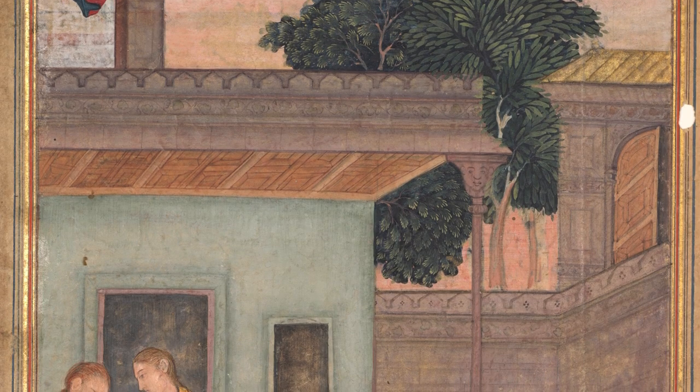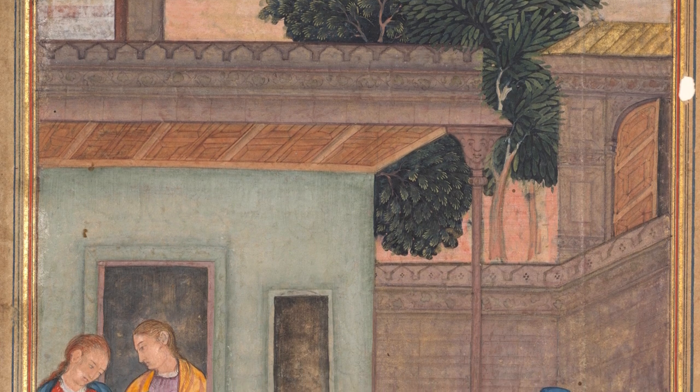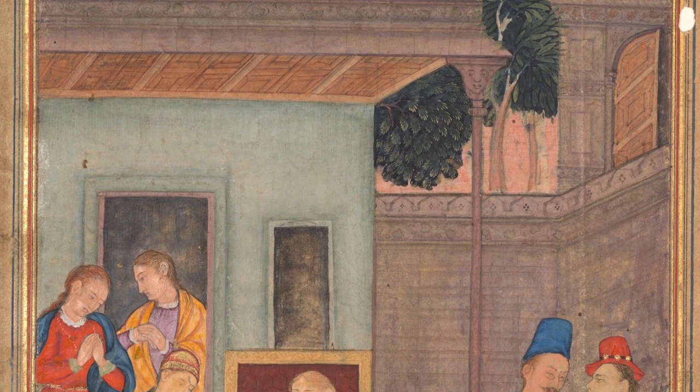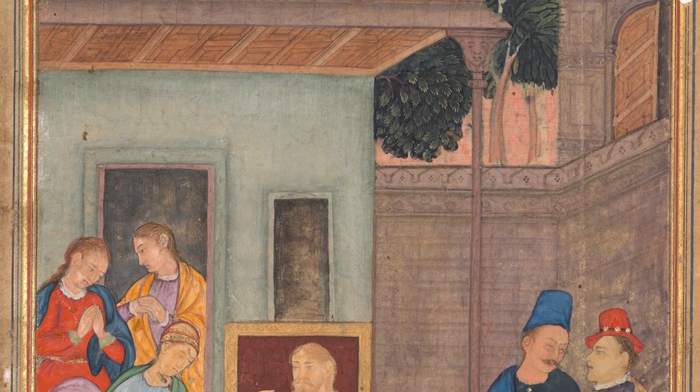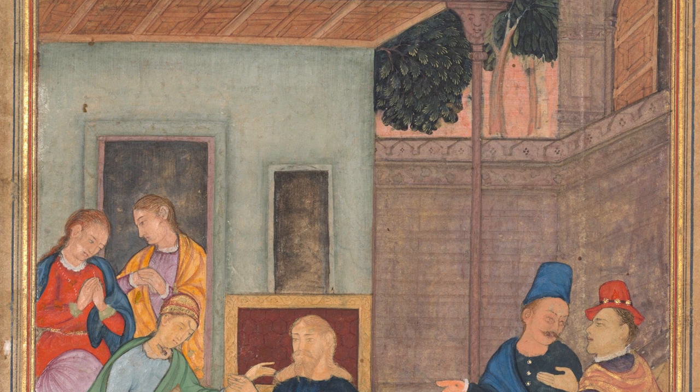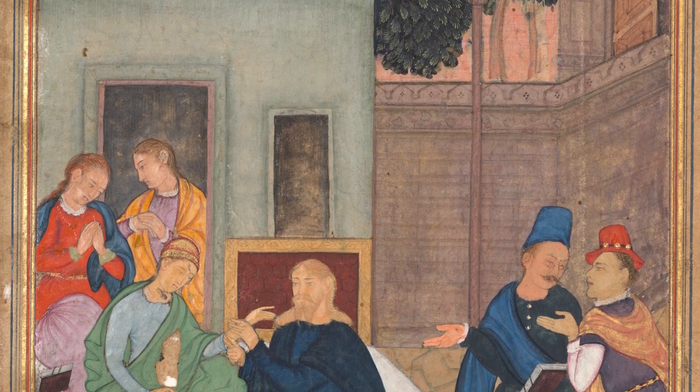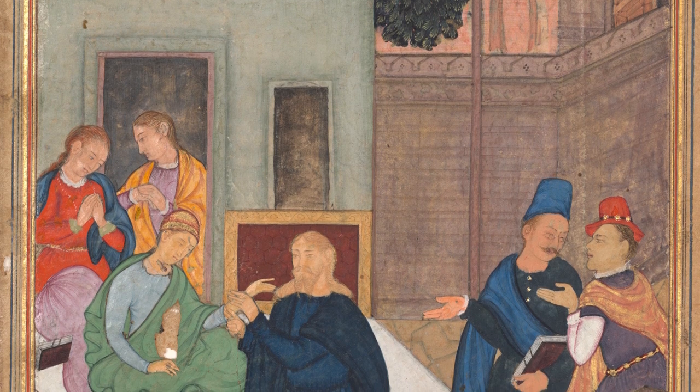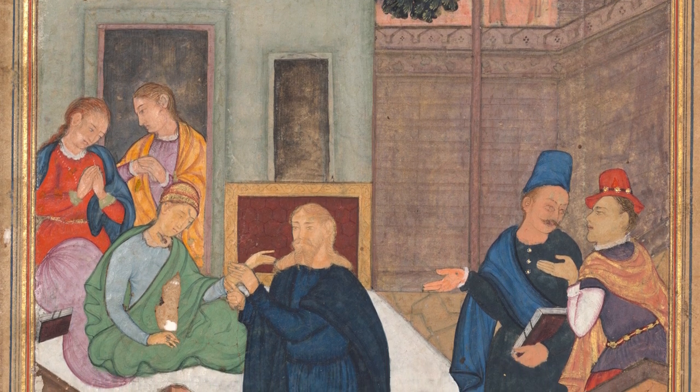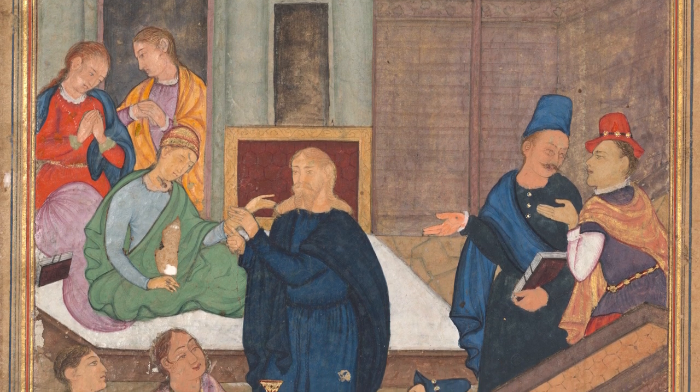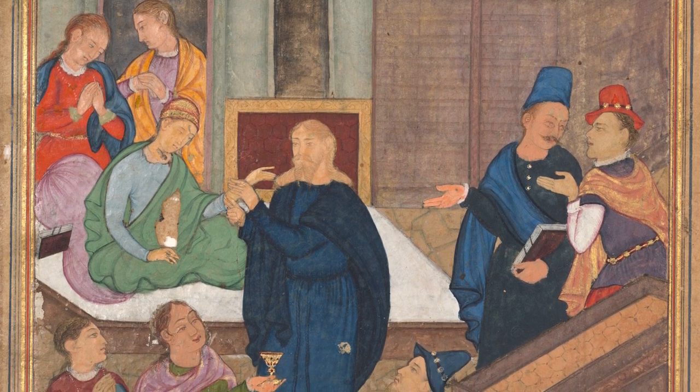Look at this illustration from a manuscript created in India. The illustration depicts Jesus raising Jairus' daughter from the dead. Notice the brilliant watercolor paints and ink colors that were used in this manuscript. How many different shades and combinations of red, green, and blue can you find?